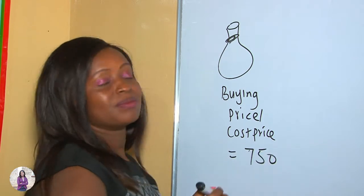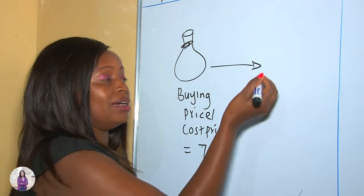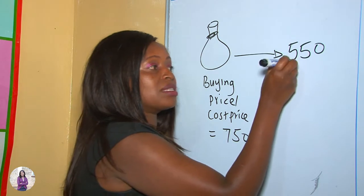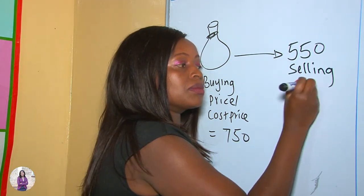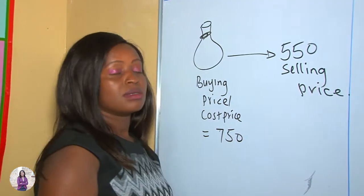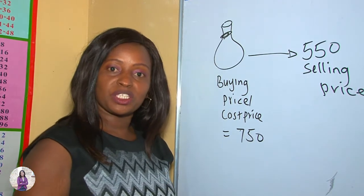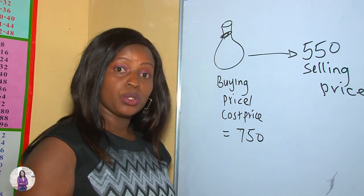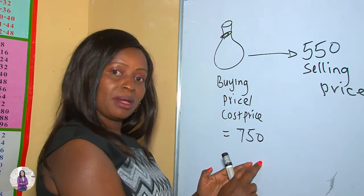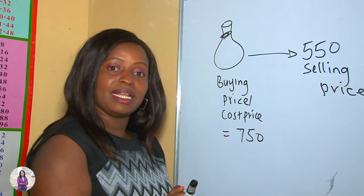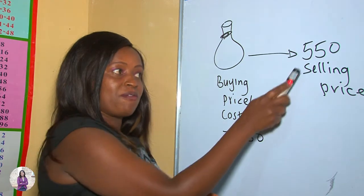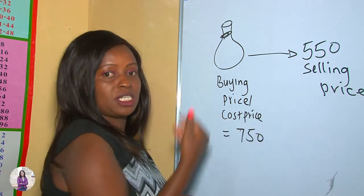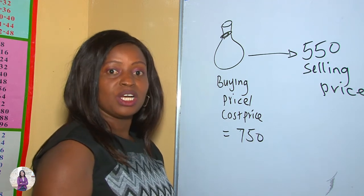— goes to 750 shillings. When you come to sell your fruits, you sell them at 550 shillings; this is the selling price. Therefore in this situation you have made a loss, because you spent 750 buying these fruits but when it came to selling, you sold your fruits at 550, meaning your money has gone down from 750 to 550. Therefore this is what you call loss.